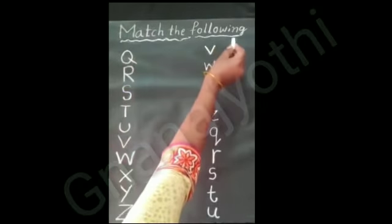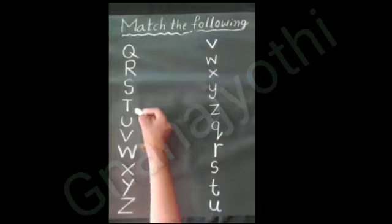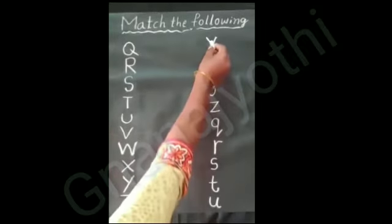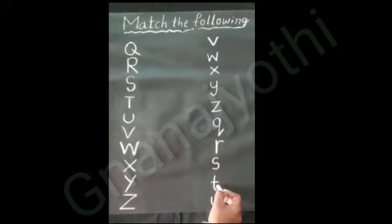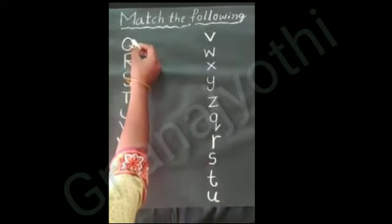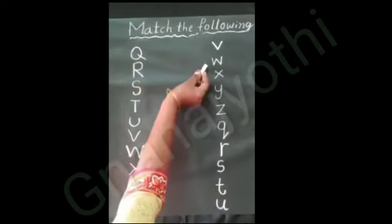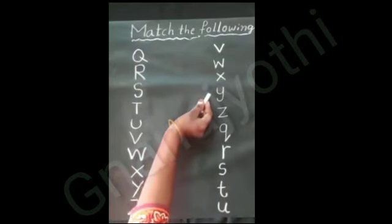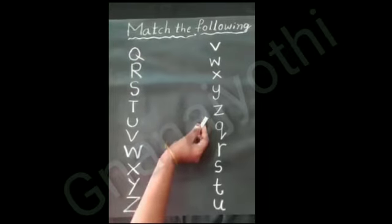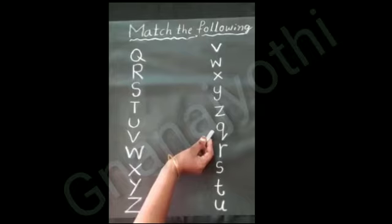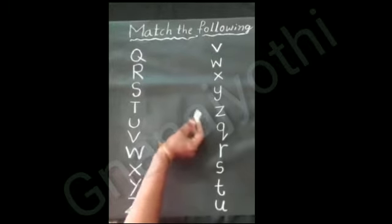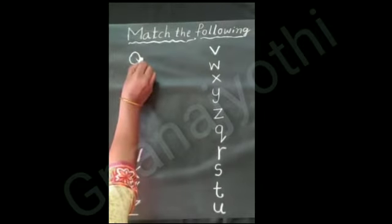Match the following. First line is capital letters, second line is small letters. This is capital Q. Very small Q. Yeah, this is a small Q. Match it.